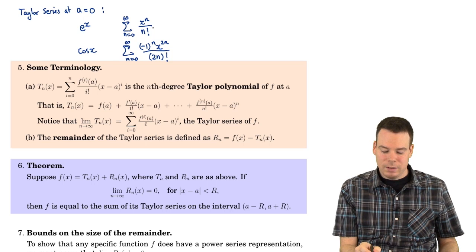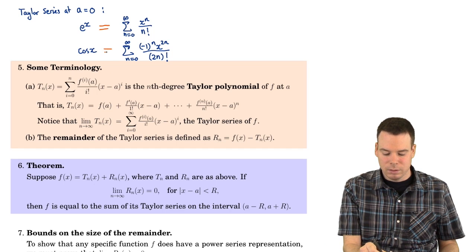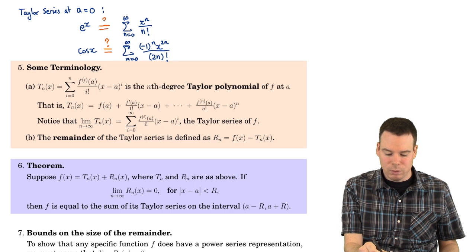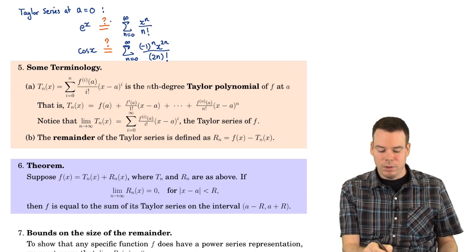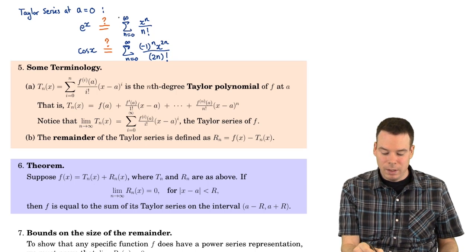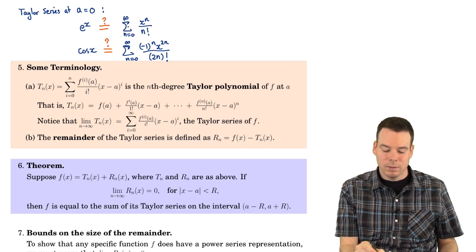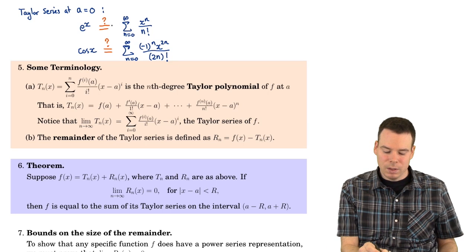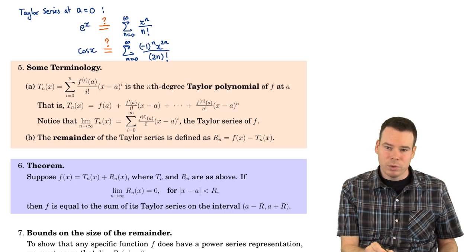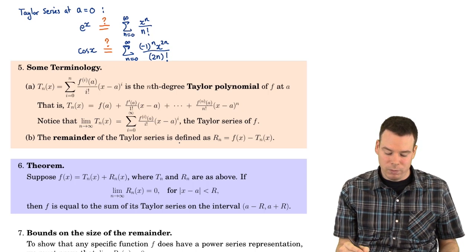We've got these series expansions, but notice I was very careful not to write an equality here. The reason is because I don't know if they're equal. I don't know if the exponential function is actually equal to the values that come out of the series. At this point I don't even know what the radius of convergence of this series is, so I don't know if they're equal or what interval the equality would hold on. How do we know when we've constructed the Taylor series if it equals the function itself, and for what x values does the equality hold? That's what we're going to talk about.